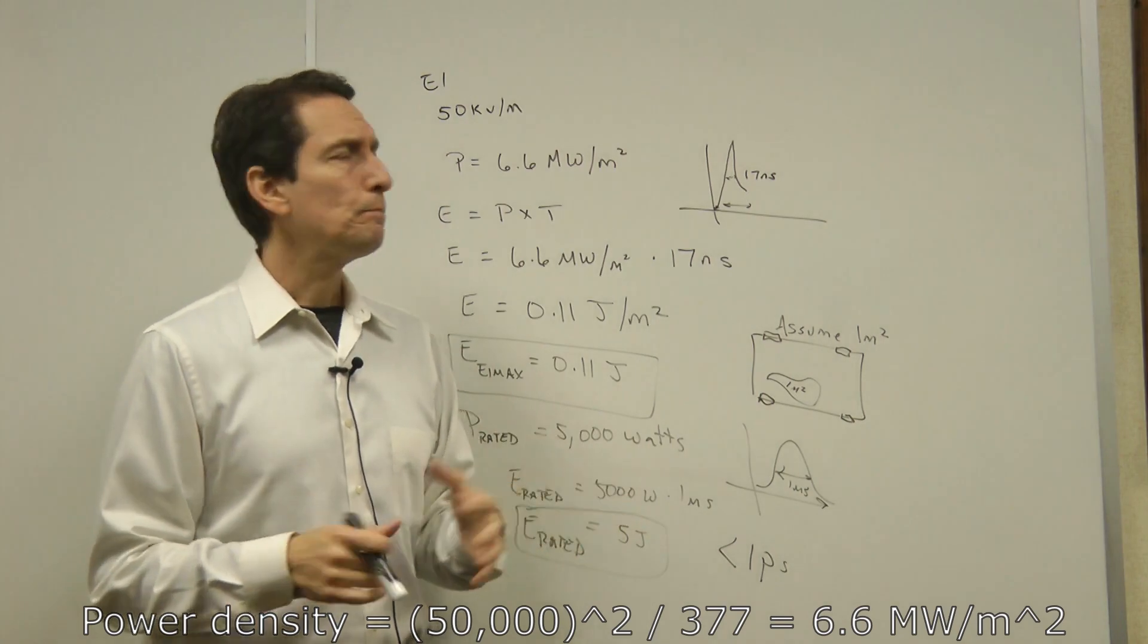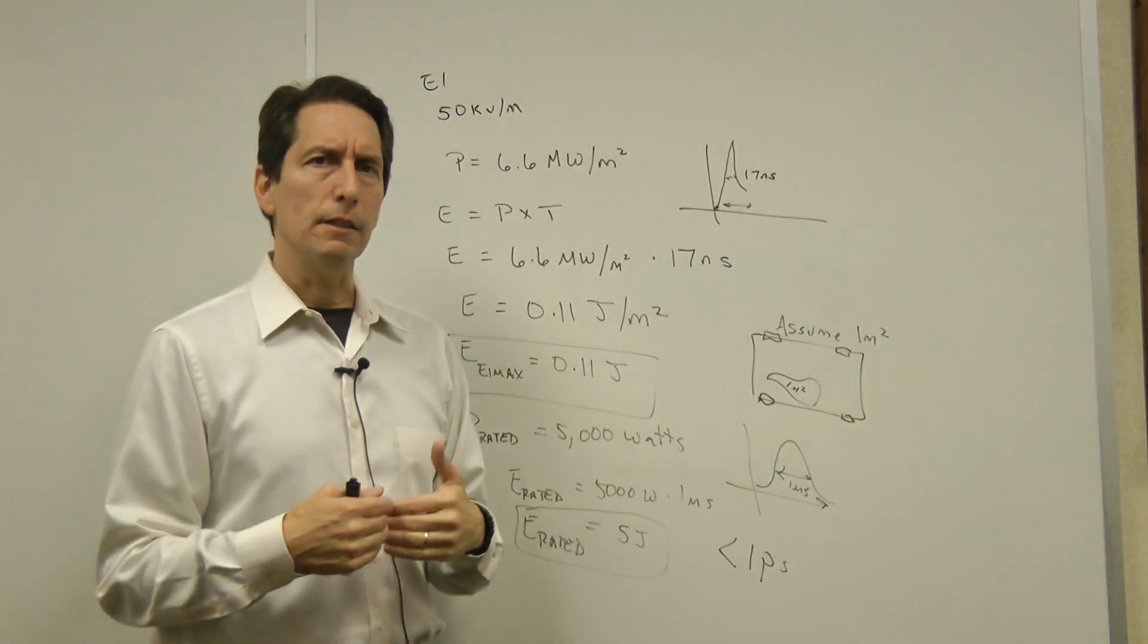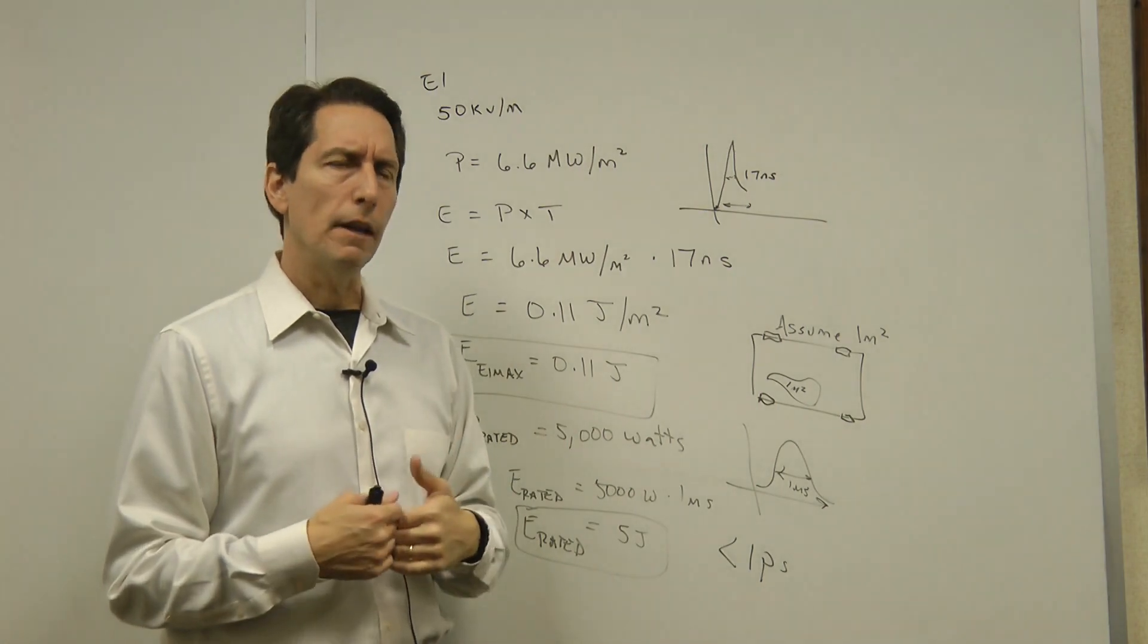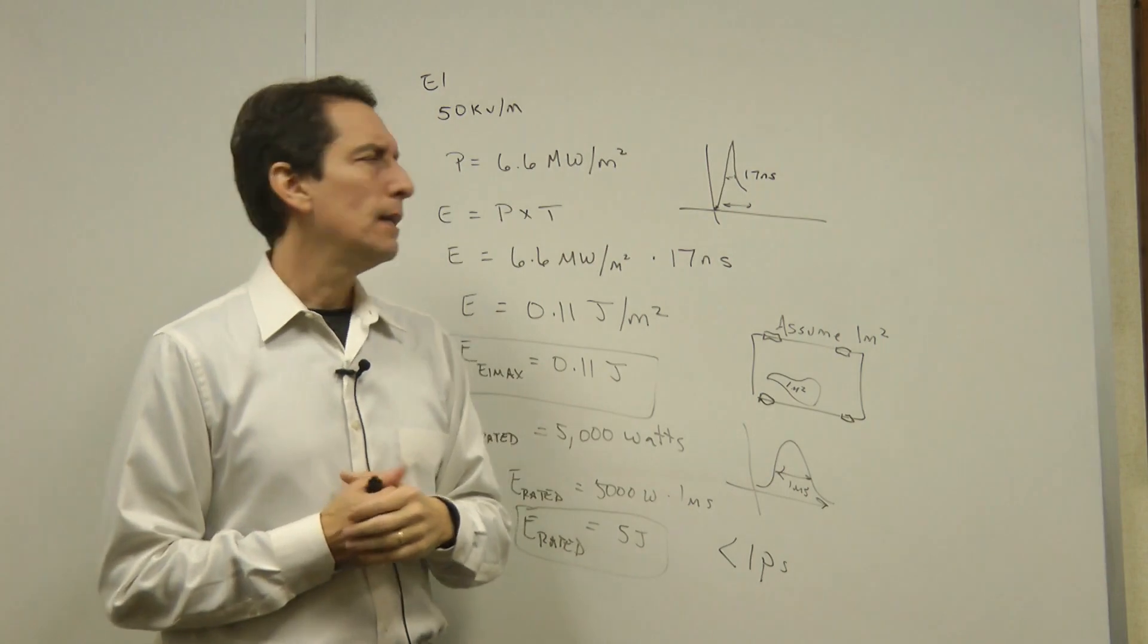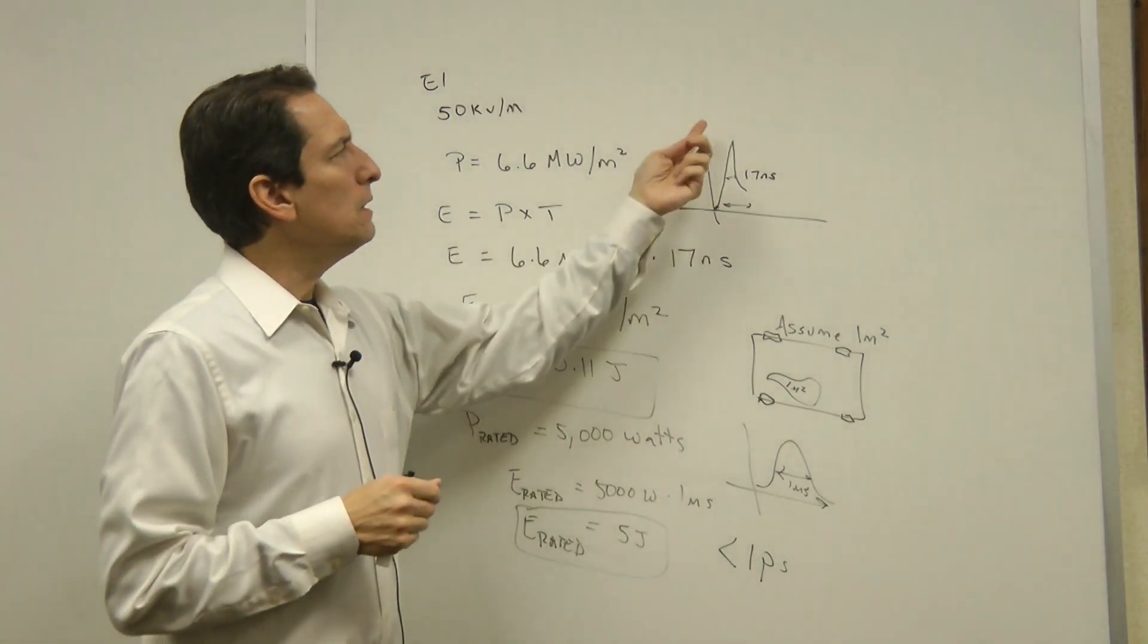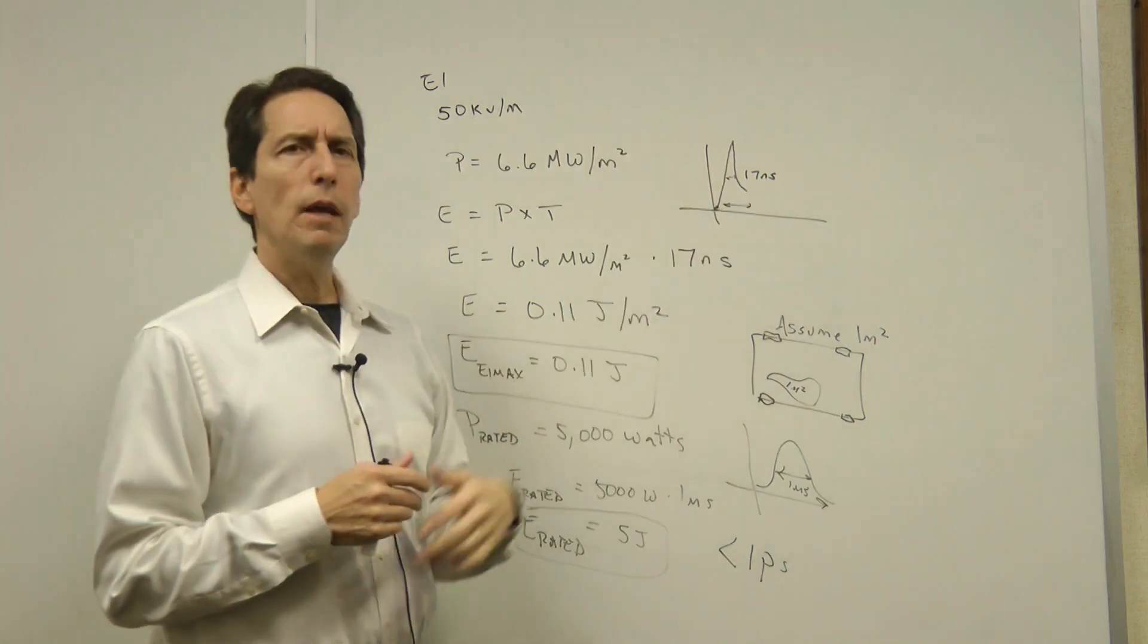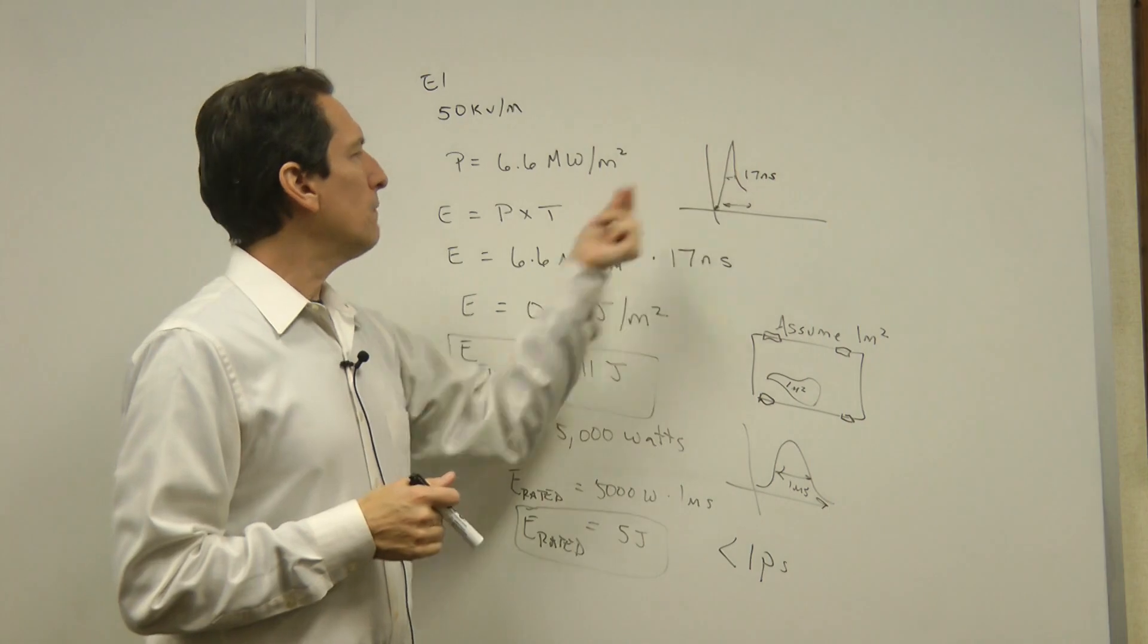Now, that's a lot of power. But what we really want to know is how much energy that is. We want to turn that into joules of energy. So energy is just simply power times time. Now the time is the pulse width of the E1. If we just looked at the E1 pulse and we assume maybe 17 nanoseconds, that's a reasonable number. You assume that for the time here.